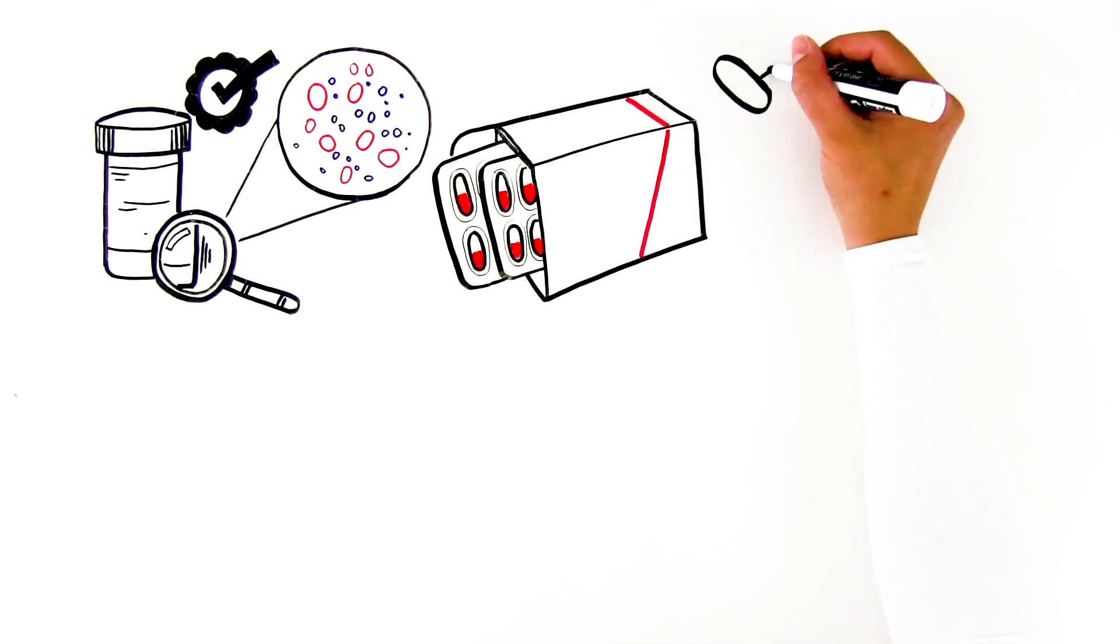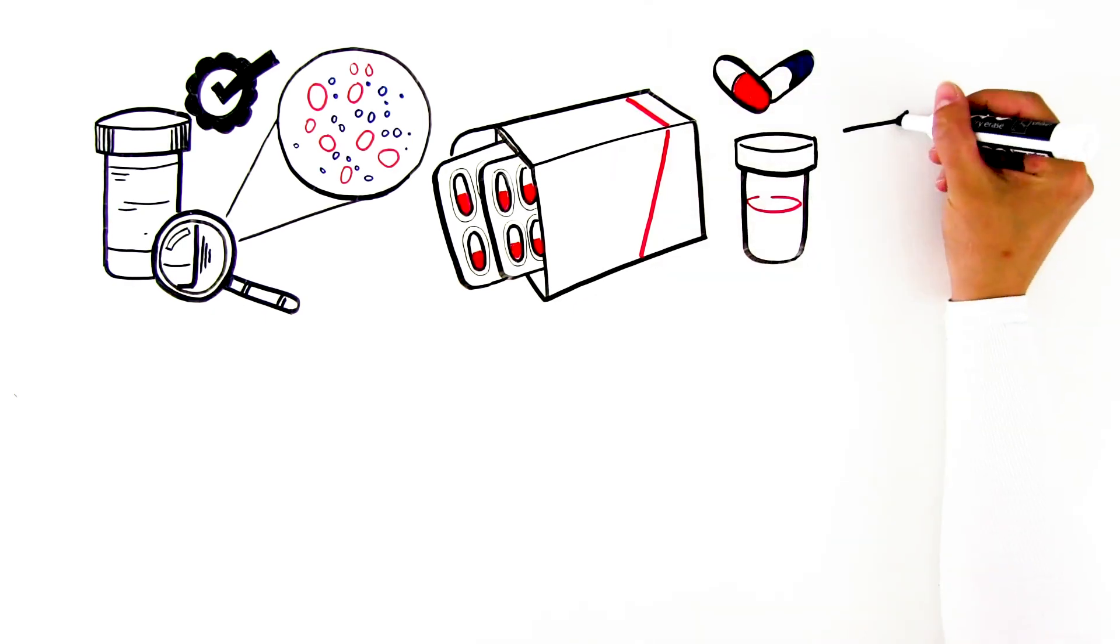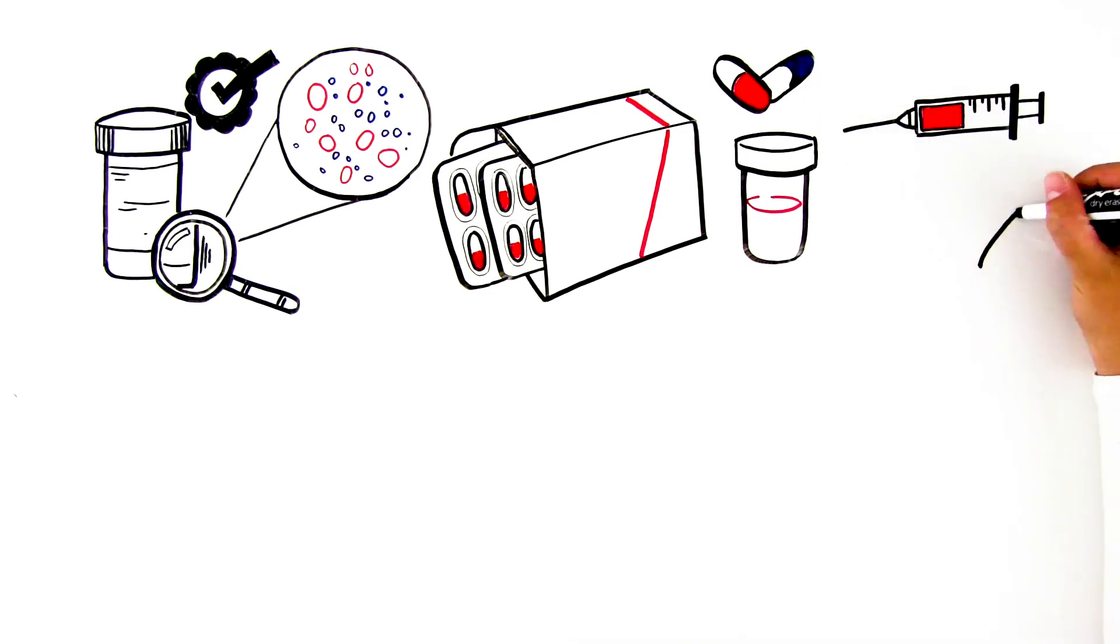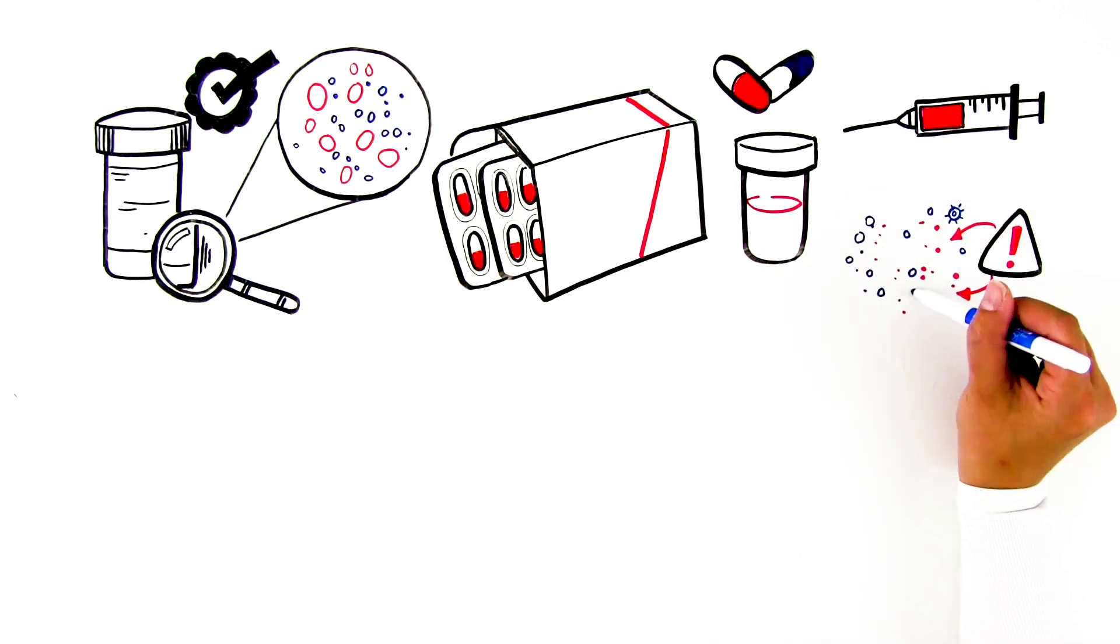The drug product container closure system, manufacturing process components, food contact material, and medical devices, such as those used in the storage and administration of the drug, should not release chemicals that can accumulate in quantities sufficient to present a risk of toxicity to the patient, consumer, user, or affect the drug's stability or efficacy.